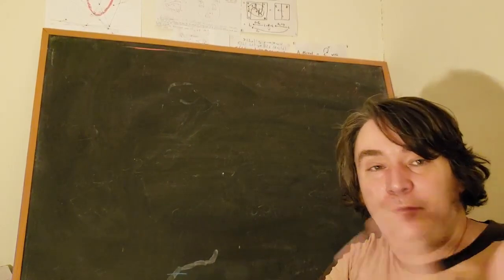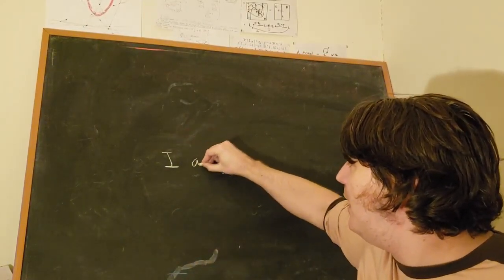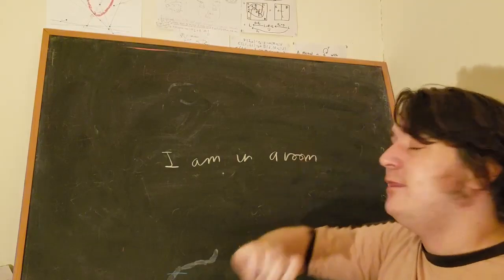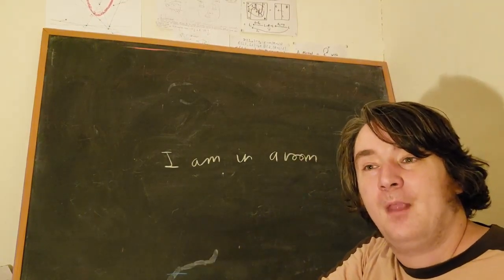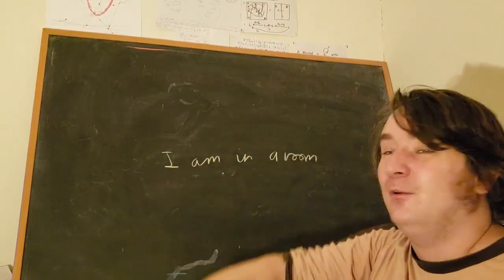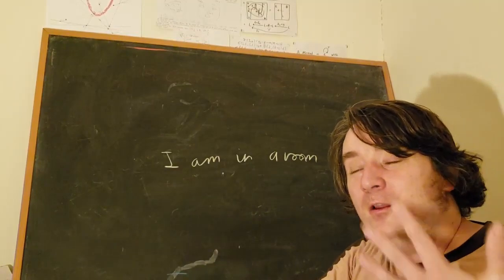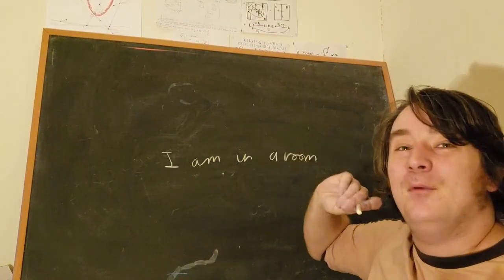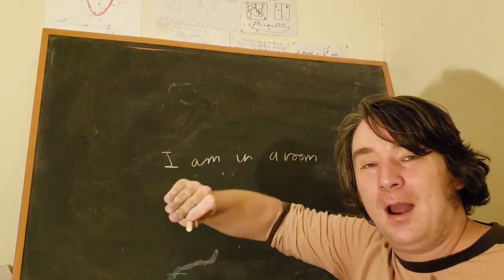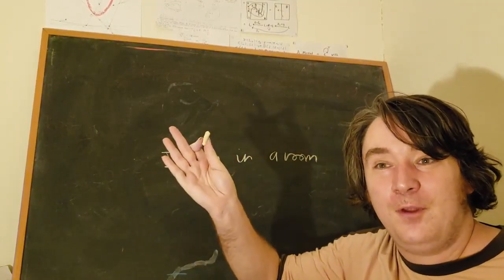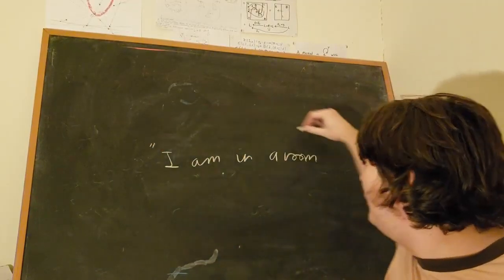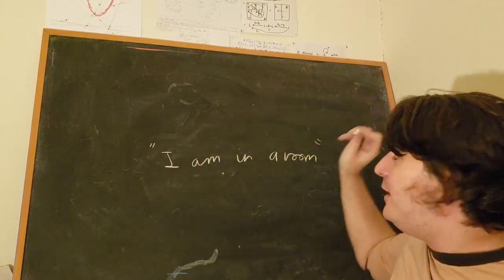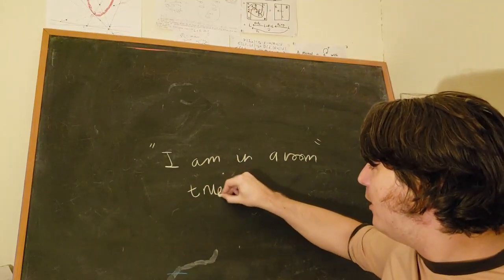Let's start with classical logic. The idea is we might have a statement — for example, "I am in a room" — and that statement can be true or false. When you look at many statements from everyday language, you can sometimes pick holes in them: what if you're stood halfway inside a room? But nitpicking aside, we can say this is a kind of statement which is either true or false.